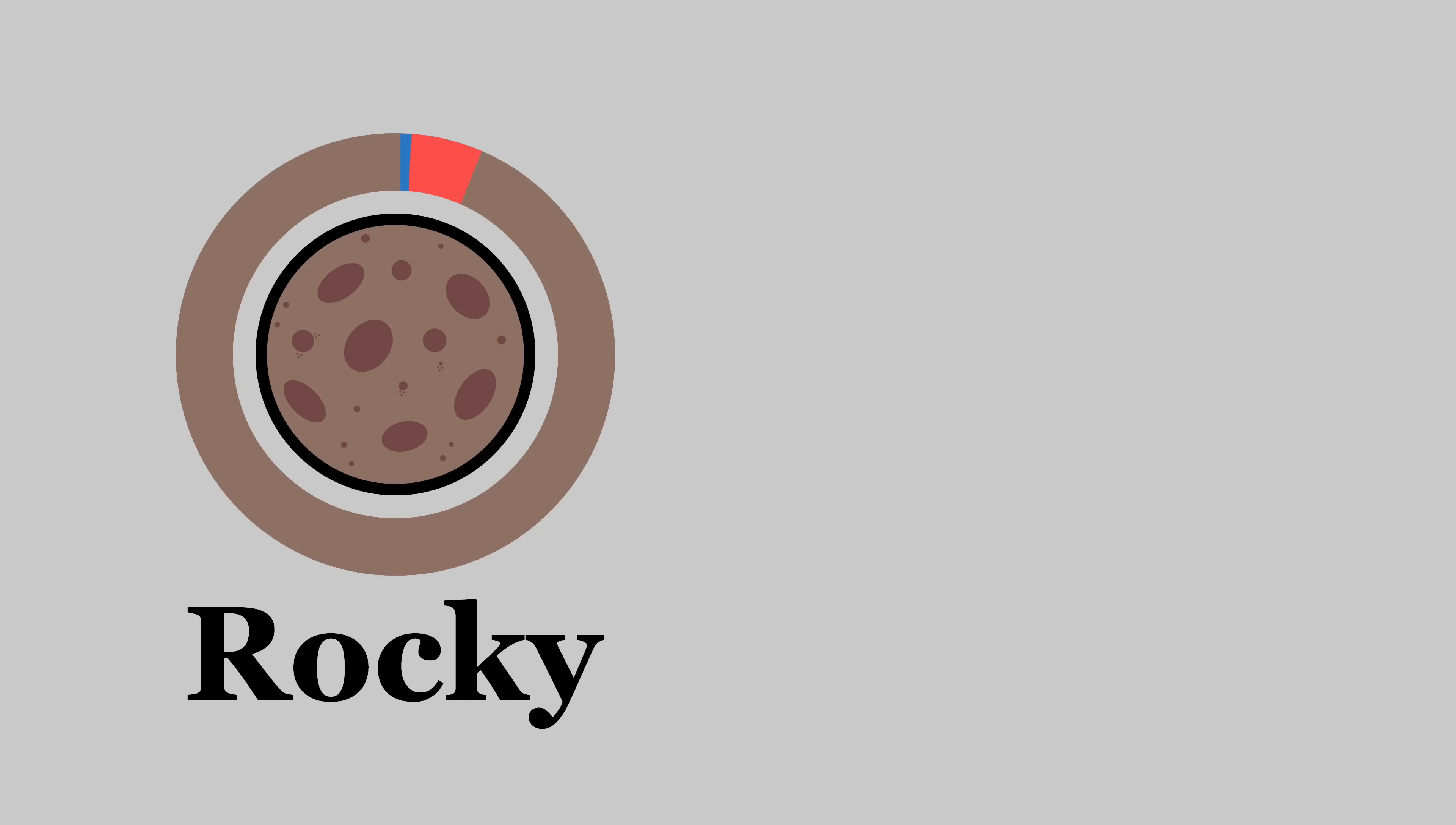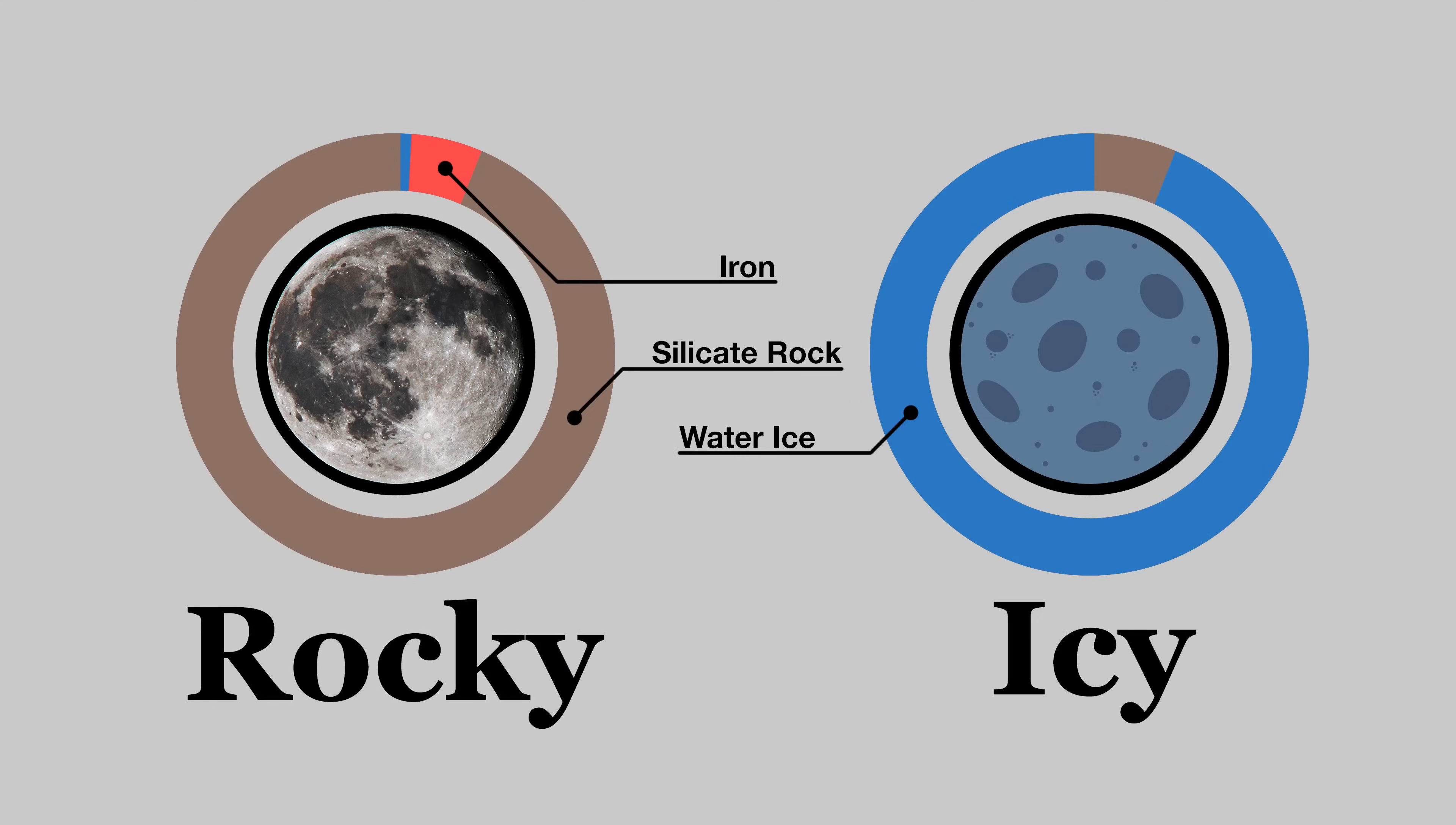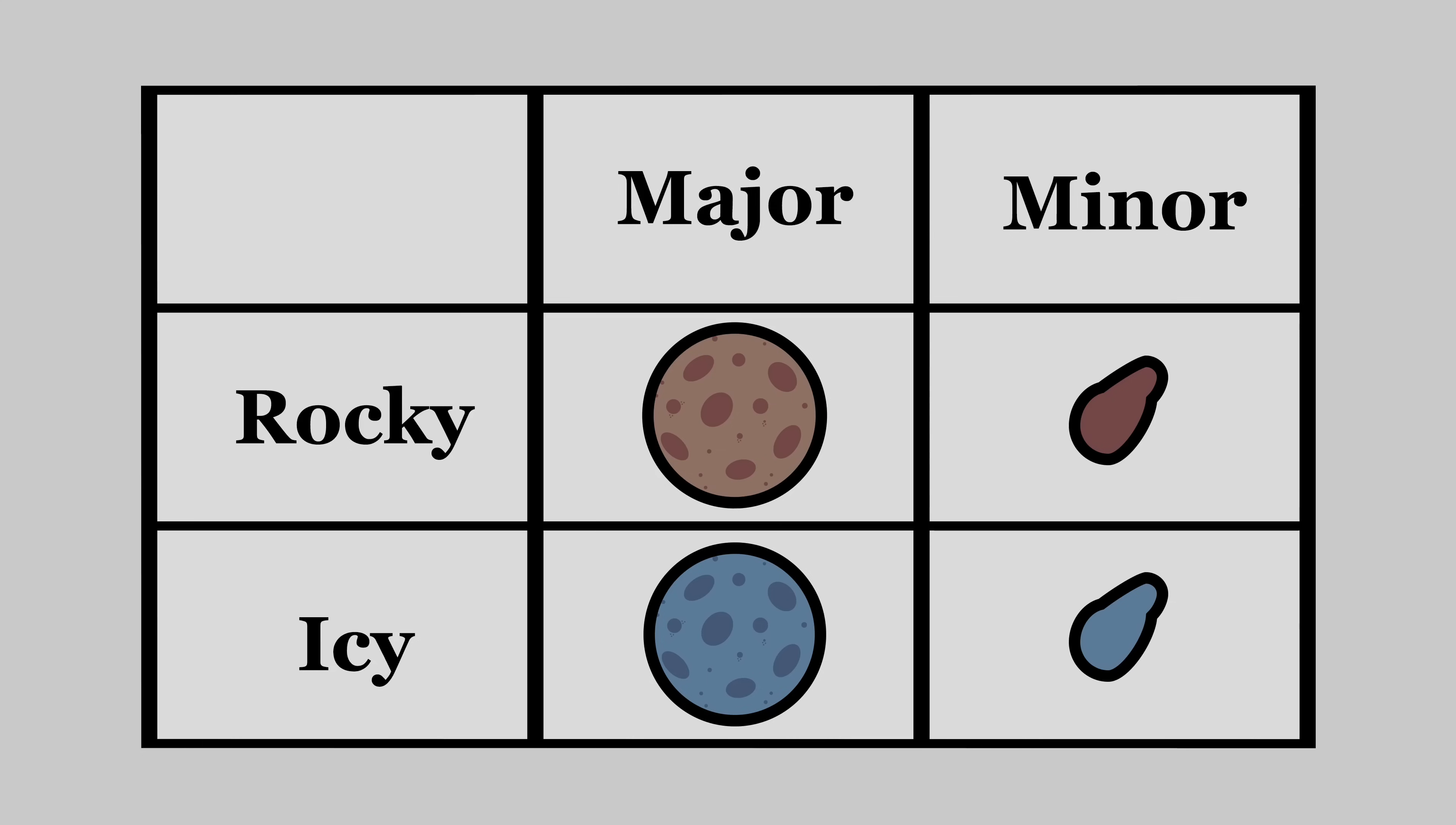Moons can be either predominantly rocky, again like our moon, or predominantly icy, like Mimas. A grid like this, although simplistic, is a very useful tool when it comes to moon building.